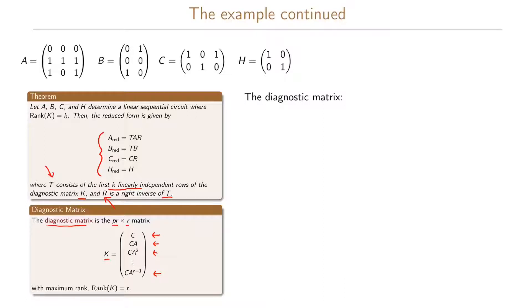Our first step is to find the diagnostic matrix. Since R equals 3, we have three memory elements or state variables, so the matrix K is given by C, then C times A, then C times A squared. Looking at our matrix C, we have rows: 1, 0, 1 and 0, 1, 0.